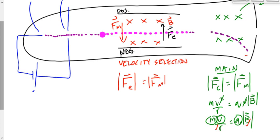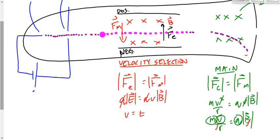We call this the velocity selection chamber, because it effectively selects a certain velocity of particles to go through undeflected. Those are the ones that enter the main chamber — we don't care about the others. The analysis: we set QE equal to QVB for the electric and magnetic forces. The Q's cancel, and V ends up being equal to E over B. Thomson found the speed — not of all the particles, but of all the ones that go straight through undeflected.